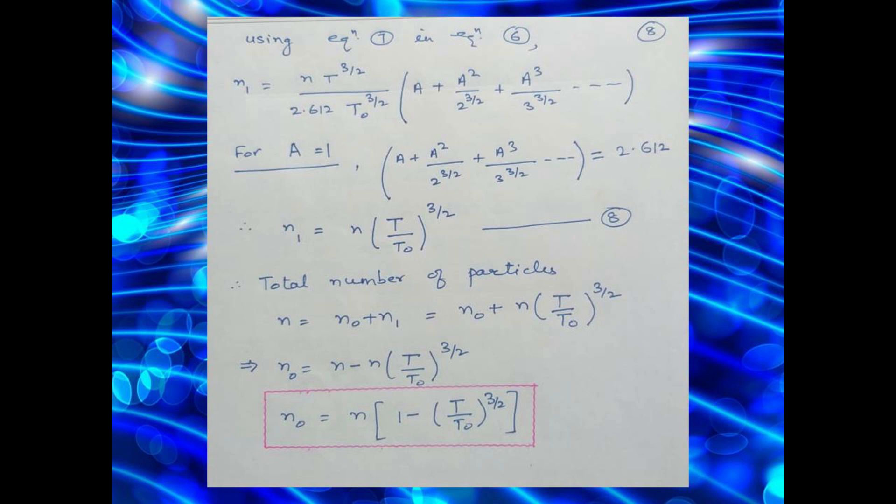Using equation 7 in equation C, we get the expression for N1. For A equal to 1, the bracketed term which is a function of A only becomes equal to 2.612. Thus we have the expression for N1 as N into T over T0 raised to power 3 by 2. That is why the total number of particles now can be given by N, which is N0 plus N1. Putting the expression for N1 here from equation 8, we have finally the expression for N0 which gives us the total number of bosons in the ground state, which is a function of temperature. N0 is equal to N times 1 minus T over T0 raised to power 3 by 2. This is the expression for number of particles, the bosons in the ground state.